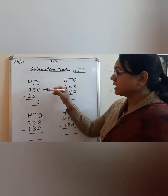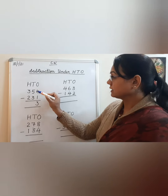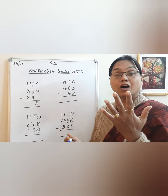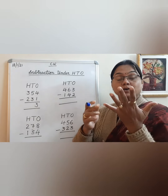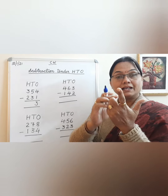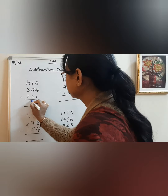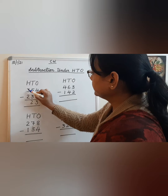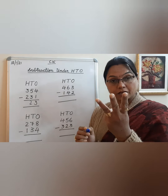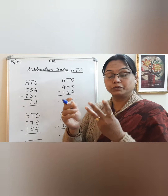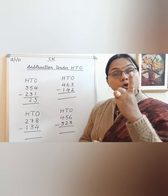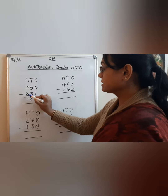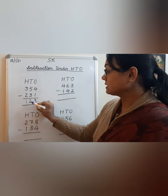Write 3. Then we move to the tens place: 5 minus 3. Take out 5 fingers and subtract 3 — 1, 2, and 3 — how many are left? 1 and 2, so write 2. Then move to the hundreds place: 3 minus 2. Take out 3 fingers and subtract 2 — 1 and 2 — how many are left? 1, so write 1. So 354 minus 231 is equal to 123.